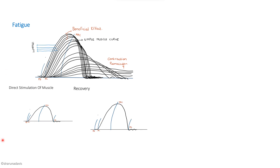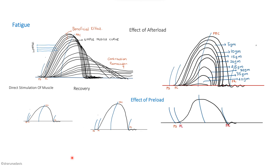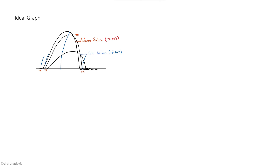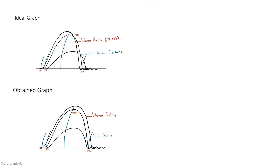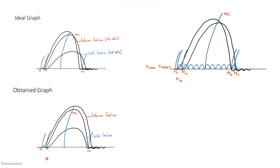In this video we discussed the effect of fatigue and recovery, proved that it is reversible, and identified the seat of fatigue in isolated nerve muscle preparation. We also covered the effect of afterload and preload, the effect of temperature with ideal and obtained graphs, and the velocity of nerve impulse.